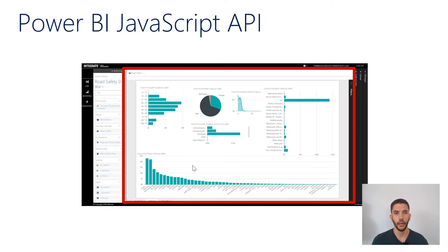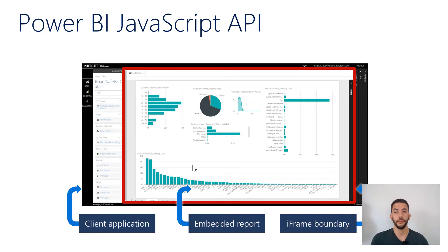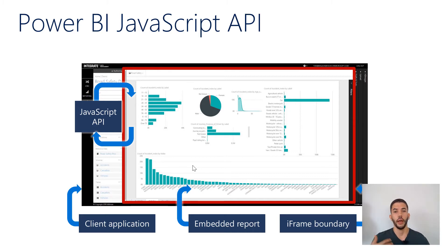The Power BI JavaScript API uses an iframe boundary — on one side is your client application, on the other is the embedded report. The JavaScript API allows you, using events, to communicate between the client application and the embedded report. You can listen to events and take actions from your data, enabling true bidirectional communication between your Power BI report and your application.